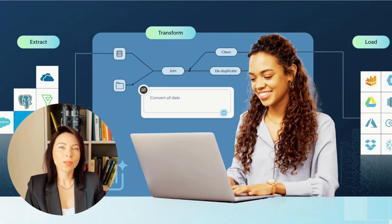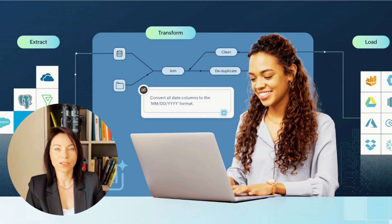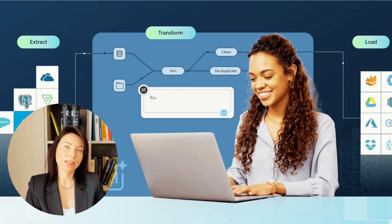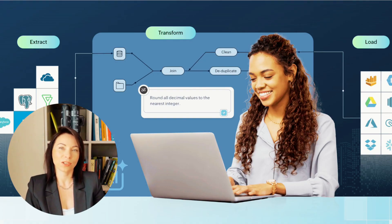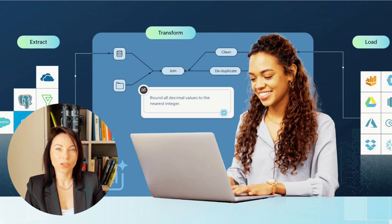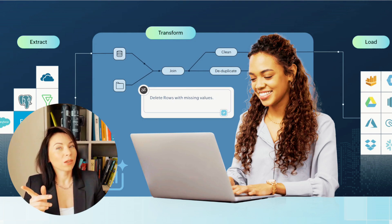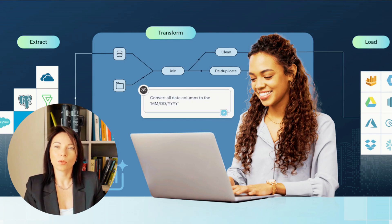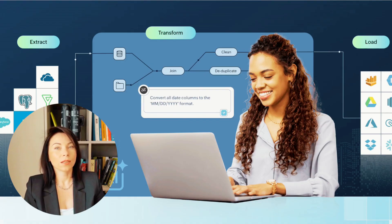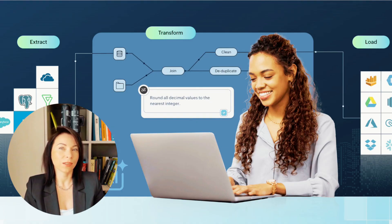In today's retail environment, businesses operate across multiple channels — physical stores, websites, and marketplaces. ETL tools help align sales data from these channels, providing a holistic view of performance. This comprehensive analysis helps optimize pricing strategies and marketing spend, ensuring resources are allocated effectively. For instance, a retail brand can track sales performance across all channels, identifying trends and making informed decisions. By understanding customer behavior and preferences, businesses can tailor their approach to maximize revenue and enhance customer engagement, all thanks to the power of ETL tools.